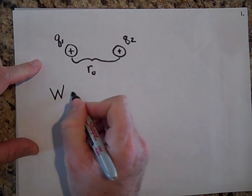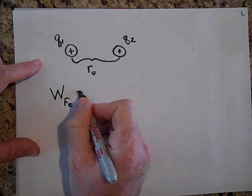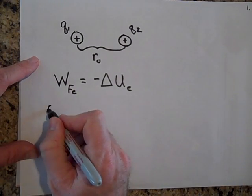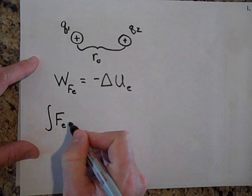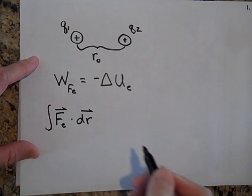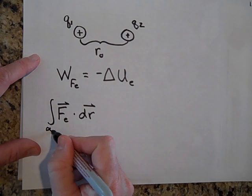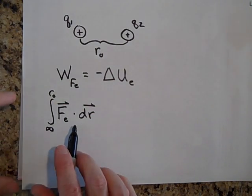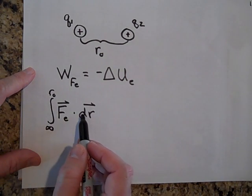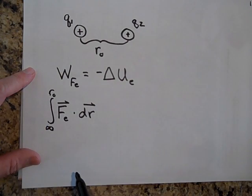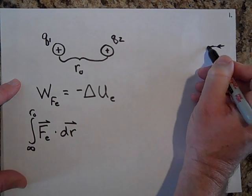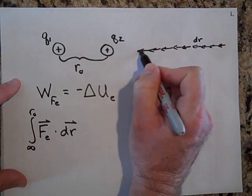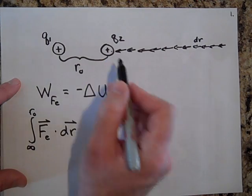The work done by the electric force equals the negative change in electric potential energy. The work done by the electric force is the integral of the electric force dot dr. We start at infinity and go all the way to R0. This is a path integral — the work is calculated along a path that starts at infinity and goes to R0. The path is made up of a bunch of little drs, coming from infinity all the way to R0.